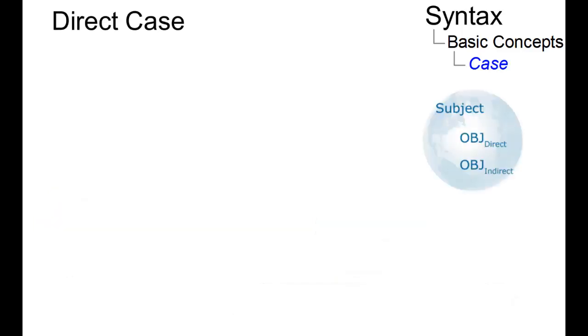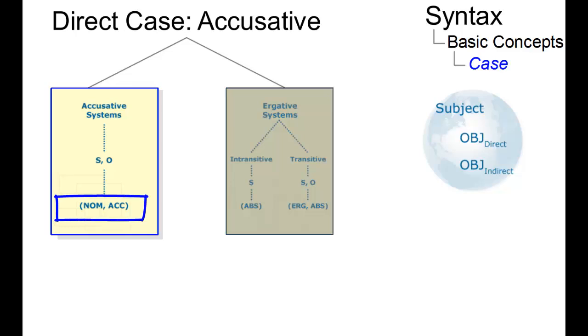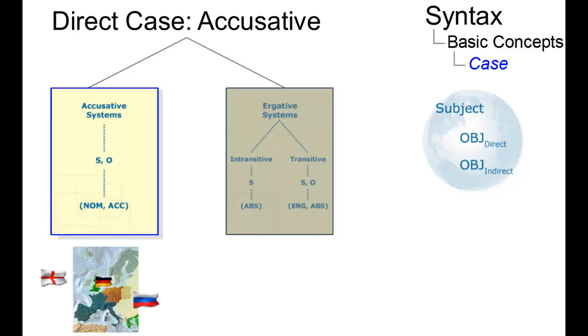Let's look at the direct case first. There are two possible direct case-marking systems. In the accusative case-marking system, subjects are generally marked by the nominative and objects of transitive verbs by the accusative case. This system can be found in most of the Indo-European languages.